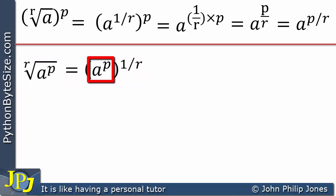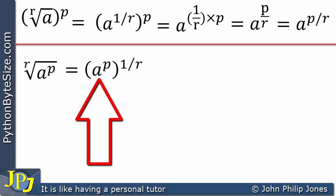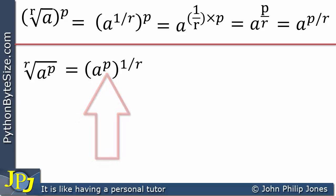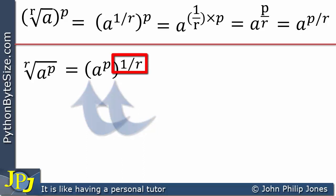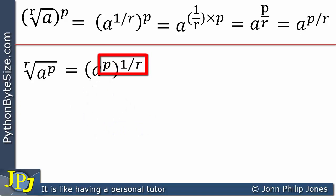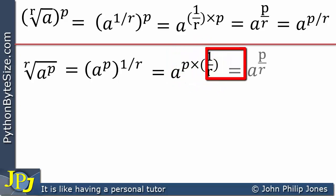We can rewrite this by placing a to the power p in brackets, then raising those brackets to the power one divided by r — meaning we are taking the rth root of the bracket's contents. The base a is raised to a power and the entire expression is then raised to another power, so we multiply the indices, rewriting as a to the power of p divided by r.